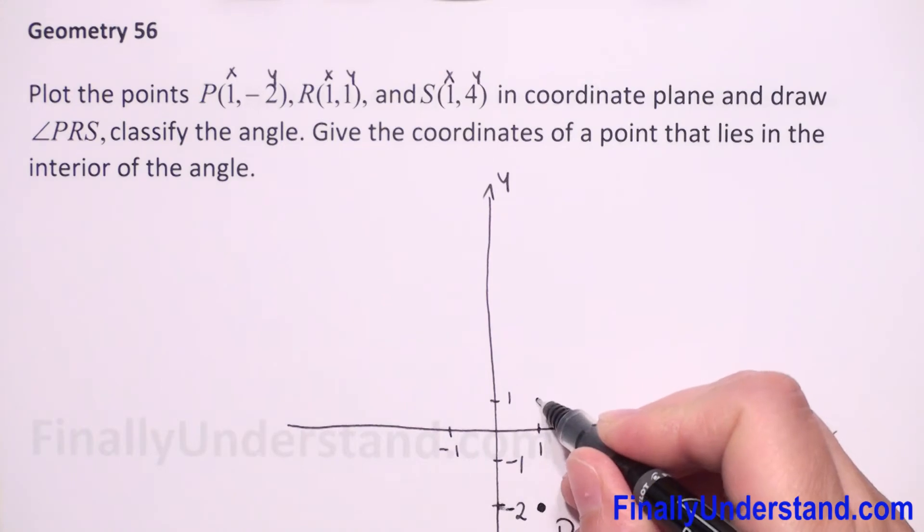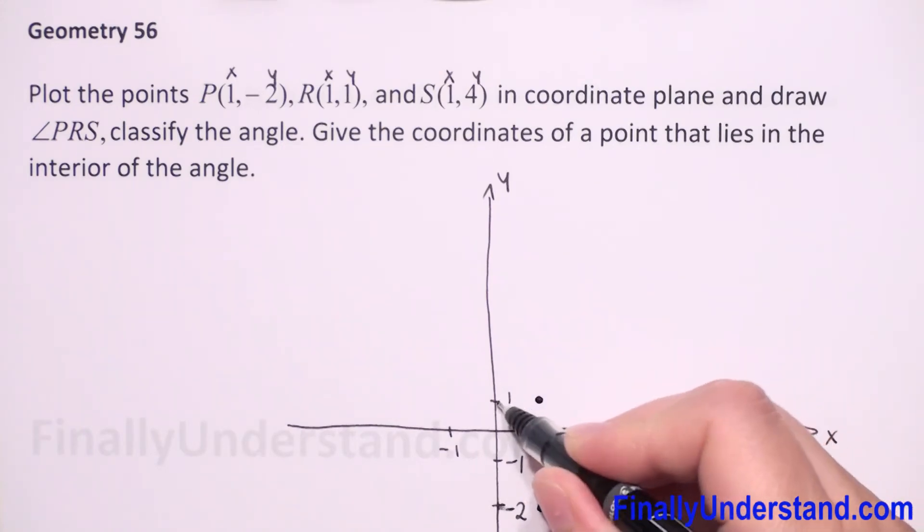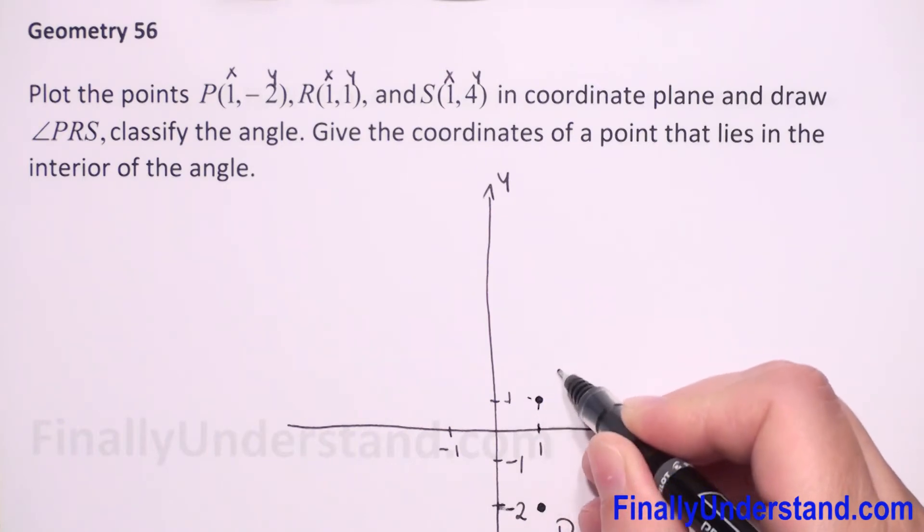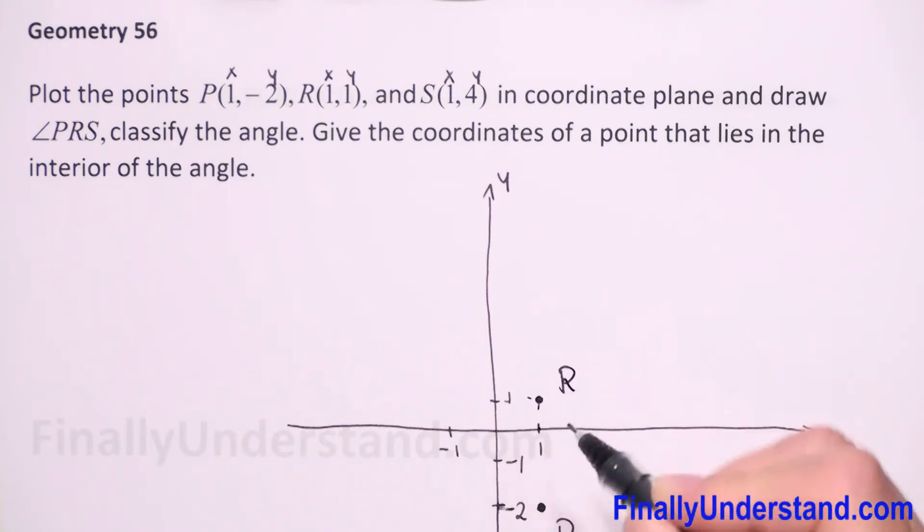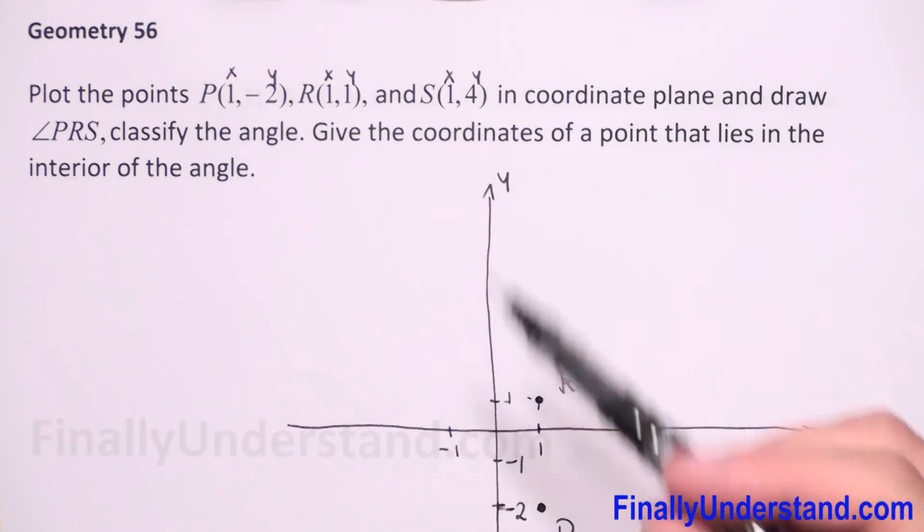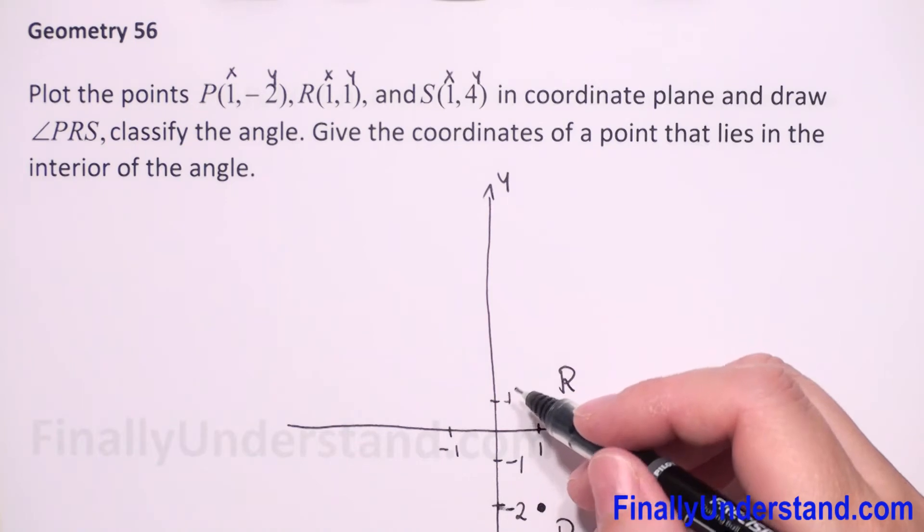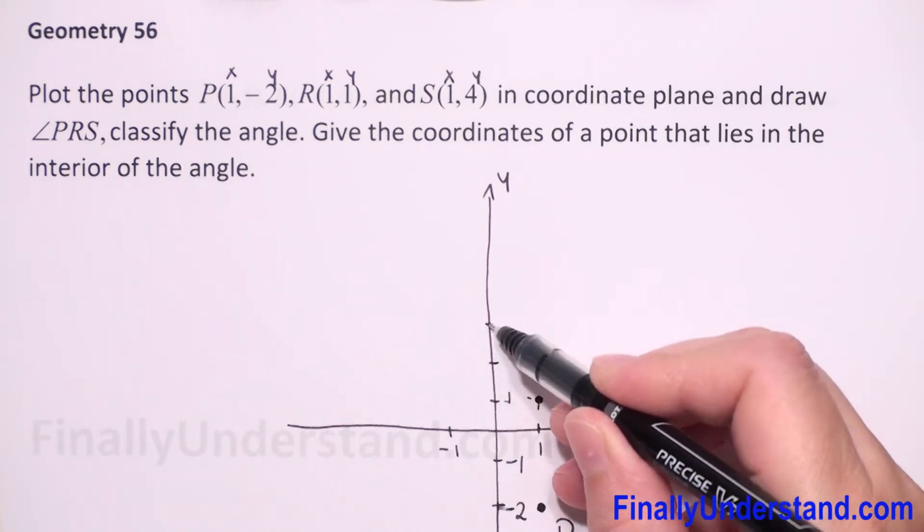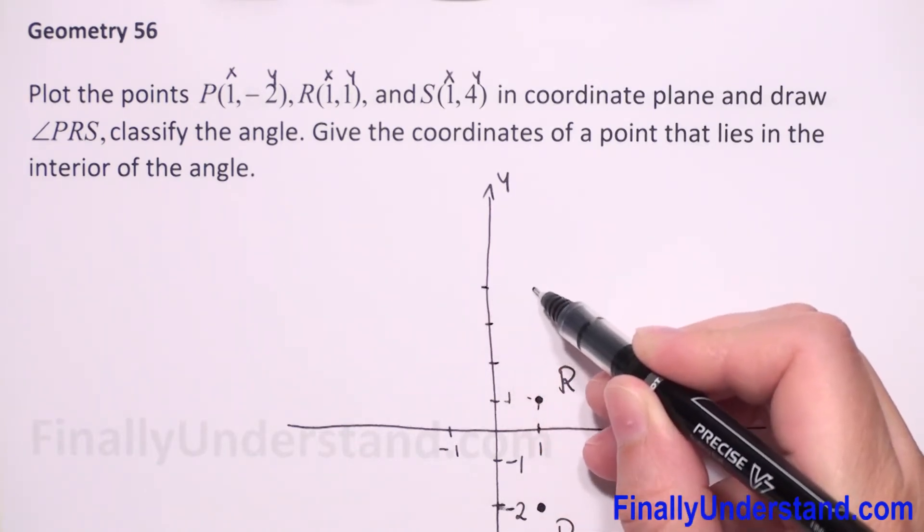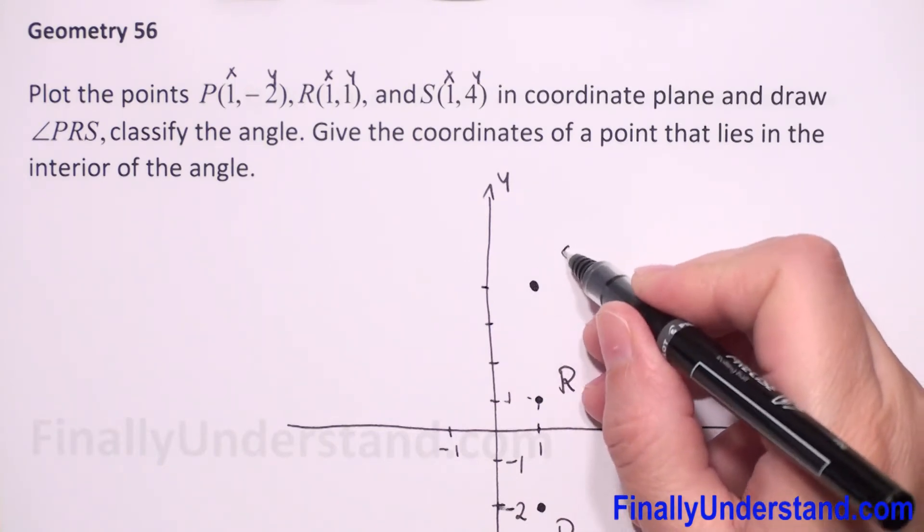And the third point is (1, 4) - one for x and four for y. Two, three, four - so this is our point S.